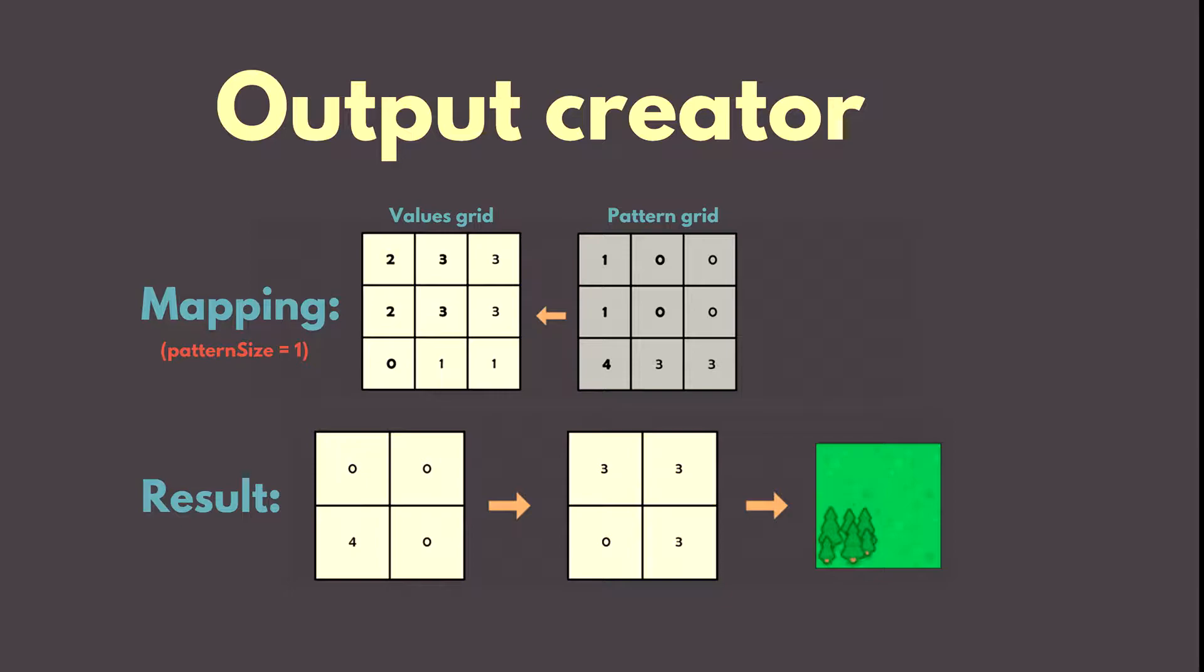So if we have a 3 by 3 grid of patterns and each pattern is 2 by 2 in size, then we end up with a 6 by 6 output grid. And what do we return? 6 by 6 or 3 by 3? Or do we cut the output?